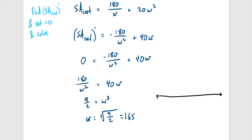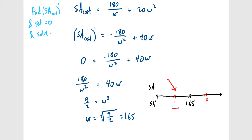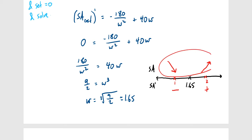For the first derivative test, we set up a number line at W ≈ 1.65. Plugging W = 1 (to the left) into the derivative gives a negative value, meaning the function is decreasing. Plugging W = 2 (to the right) gives a positive value, meaning the function is increasing. Since the function changes from decreasing to increasing, this confirms a minimum value.